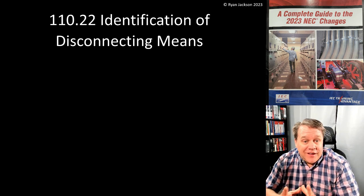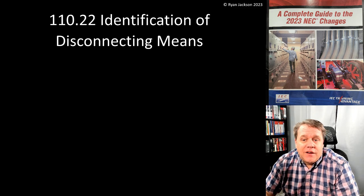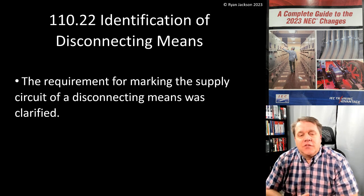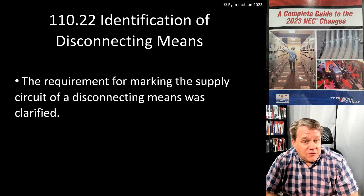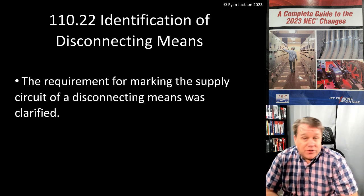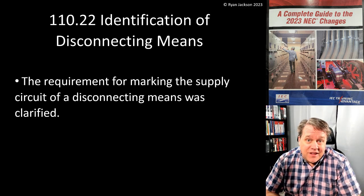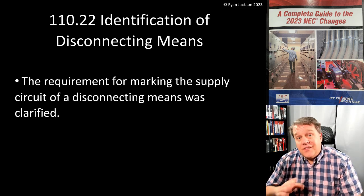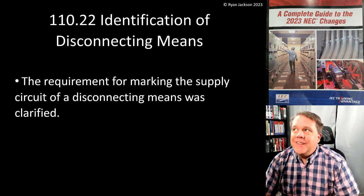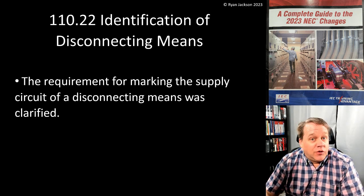We're still in Article 110, talking about Section 110.22 - identification of disconnecting means. The requirement for marking the supply circuit of a disconnecting means was clarified - and let's be honest, it was fixed. We're humans, sometimes we make mistakes, and in the 2020 version of the code there was good intent on this section but it didn't quite say what it needed to say.